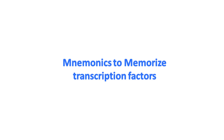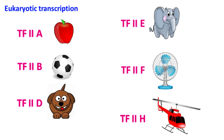Because there are so many transcription factors involved in eukaryotic transcription, it's easy to memorize them with the help of mnemonics. For example, the mnemonic for TF2A is Apple, TF2B is Ball, TF2D is Dog, TF2E is Elephant, TF2F is Fan, and TF2H is Helicopter.